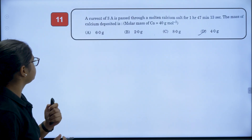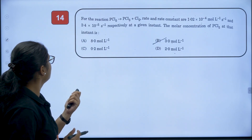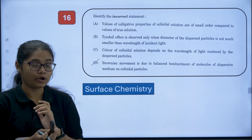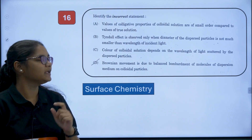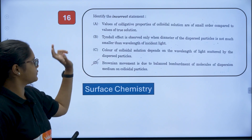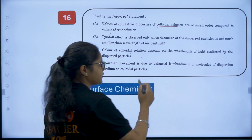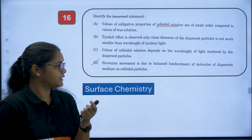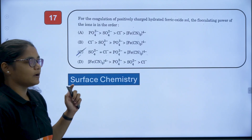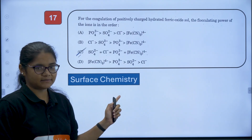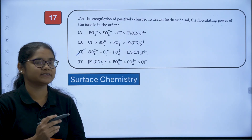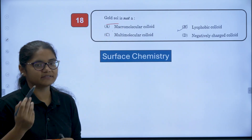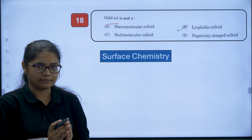Next is question number 16. Surface Chemistry and colloidal particles was an important chapter that was deleted from the syllabus. Question number 16 asked about colloidal solution properties and is deleted — it will not be evaluated. Question number 17 is about coagulating power, also from Surface Chemistry, and will not be evaluated. Question number 18 is about gold sol, also from Surface Chemistry, and will also not be evaluated.